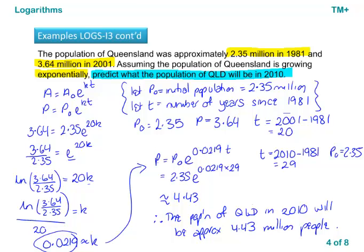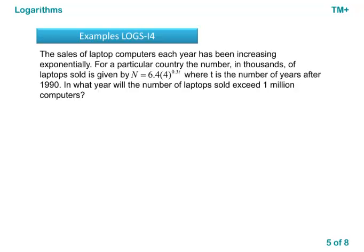Another example: the sales of laptop computers each year has been increasing exponentially. For a particular country, the number of laptops sold in thousands is given by n equals 6.4 times 4 to the power of 0.3t, where t is the number of years after 1990. The variables are defined for us: n is number in thousands of laptops sold.